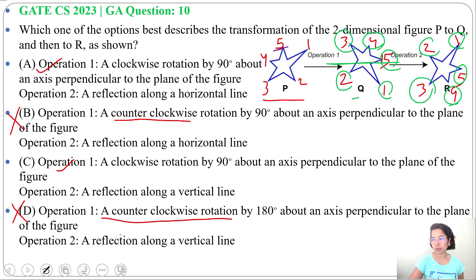So from Q to R, we are reaching by horizontal rotation. Now check operation 2. A reflection along horizontal line. This is correct. Check option C. A reflection along vertical line. No. Vertical means like this. Vertical will be like this, this will reflect.